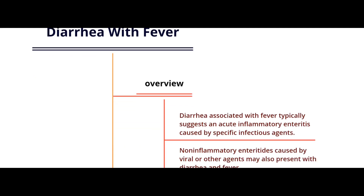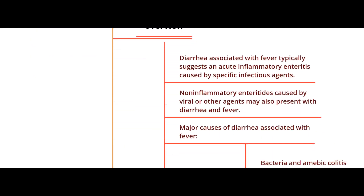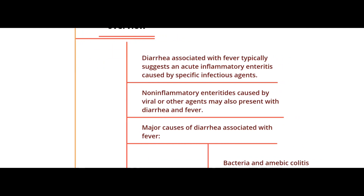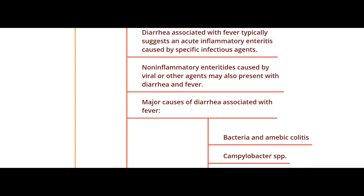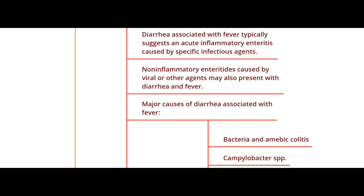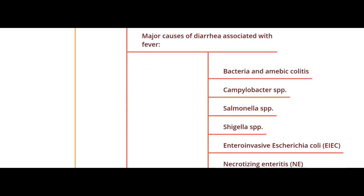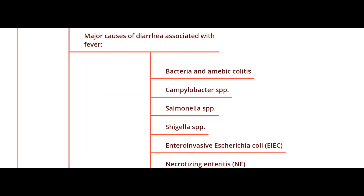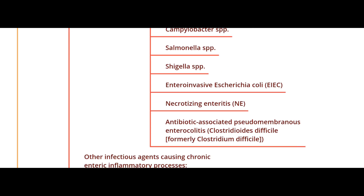Starting with the overview: diarrhea associated with fever suggests an acute inflammatory enteritis caused by a specific infectious agent. Non-inflammatory enteritis caused by viral or other agents may also present with fever and diarrhea, but typically it's less common. The major causes of diarrhea associated with fever are bacteria — amebic colitis, Campylobacter, Salmonella, Shigella, and E. coli species. In some specific populations it can be necrotizing enteritis, antibiotic-associated pseudomembranous colitis, or Clostridioides difficile, formerly known as Clostridium difficile.